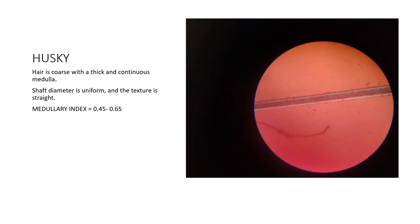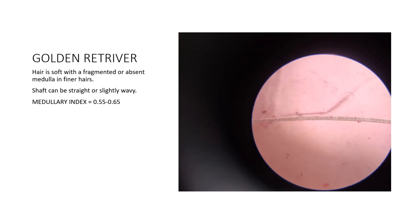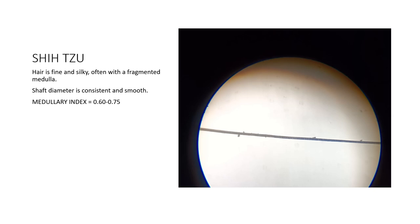The husky hair is coarse with a thick continuous medulla — we can see the medulla is thick and continuous. The hair shaft is uniform and the texture is straight. The golden retriever hair is soft, with a fragmented or absent medulla in finer hairs, and the hair shaft is straight or slightly wavy, with a medullary index ranging from 0.5 to 0.65. We observe that every breed has a different medullary index. The Shih Tzu medullary index ranges from 0.6 to 0.75; the hair is fine and silky with a consistent, smooth shaft diameter.